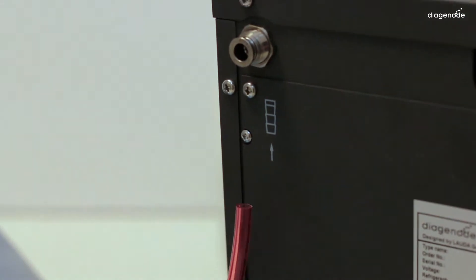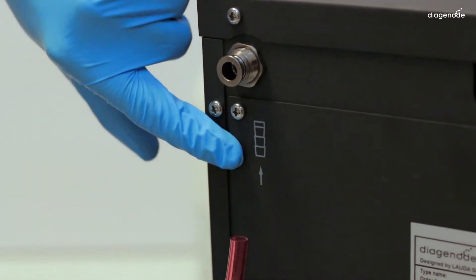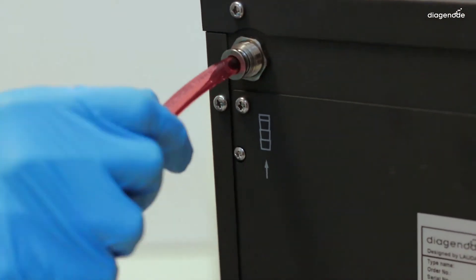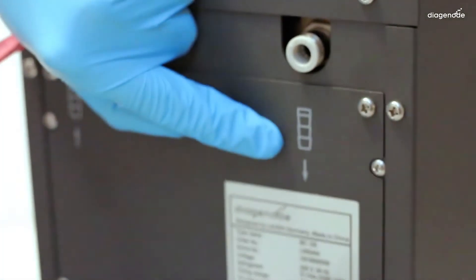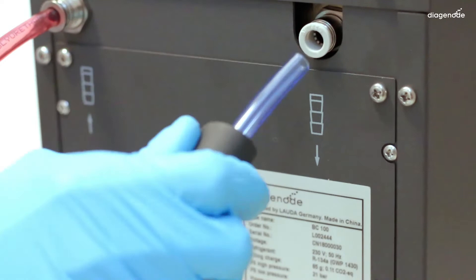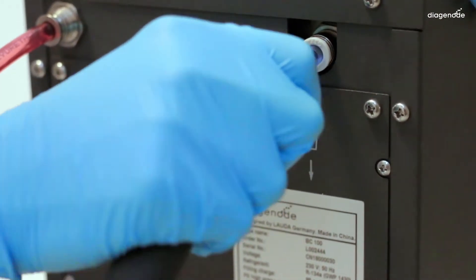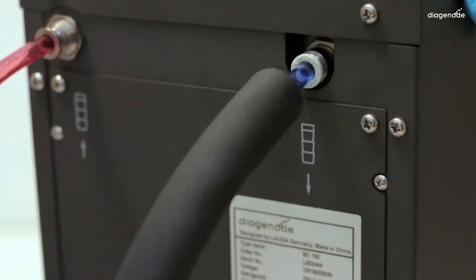At the back of the cooler, the red tube needs to be connected to the inflow and the blue one to the outflow. If they are too long, you can cut the length you need, but make sure there is enough slack.